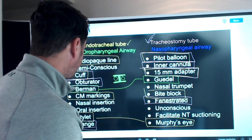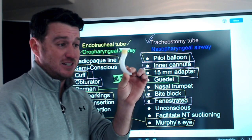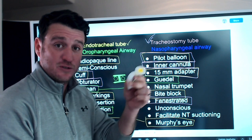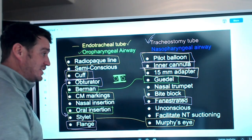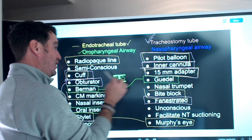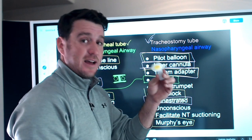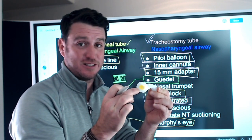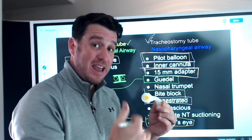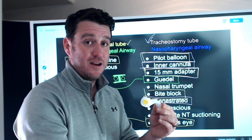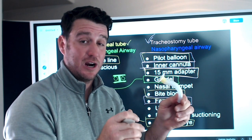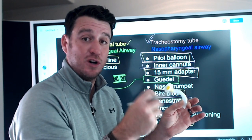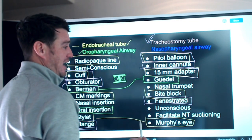Nasal insertion — no, this does not go in the nose. Oral insertion — yes, 100%, this goes into the mouth. There is no stylet, no flange, no pilot balloon, no inner cannula, and no 15-millimeter adapter on an oropharyngeal airway. You cannot mechanically ventilate or directly bag a patient through this device. It aids bag-valve-mask ventilation by preventing tongue obstruction, but you cannot attach a bag directly to it.